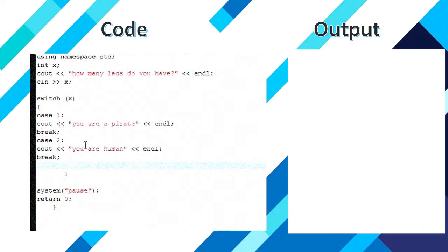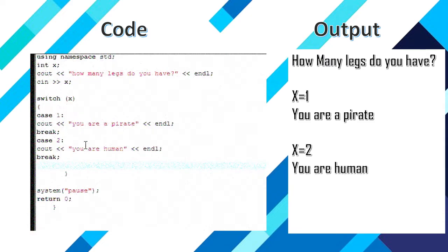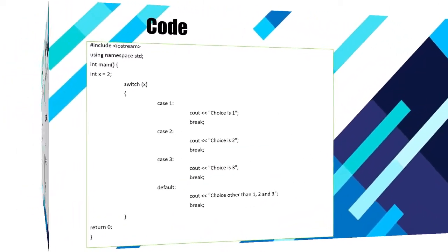The output will be: how many legs do you have? If I press 1, it will say you are a pirate. If x equals 2, then you are a human. And if I type 4, 5, or 6, it will give the pause statement. Let's see another example.